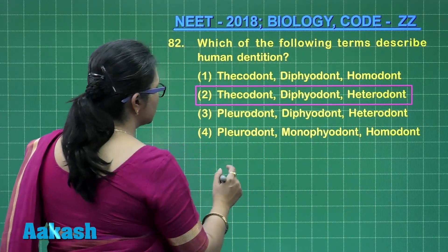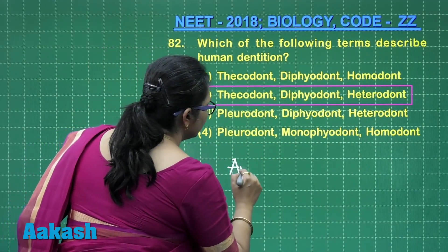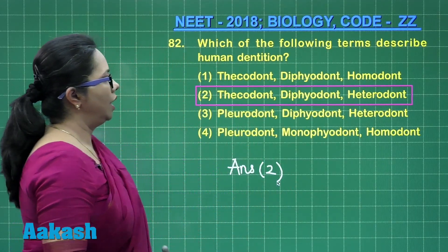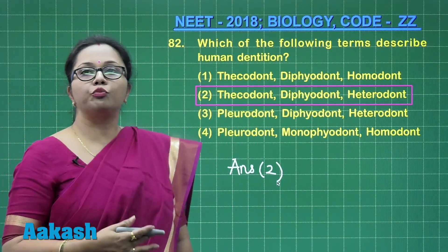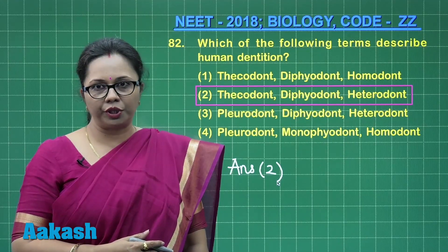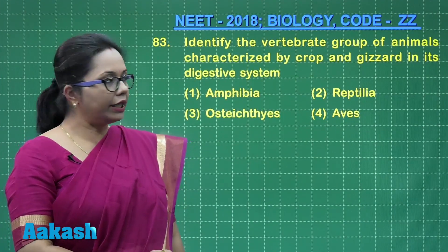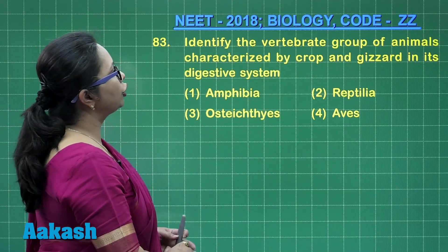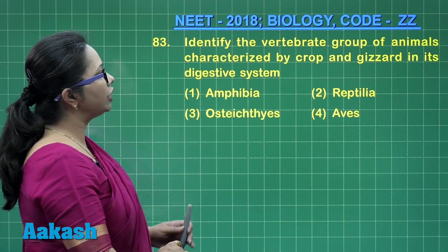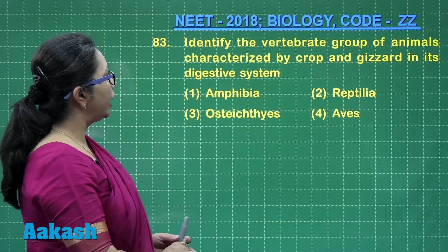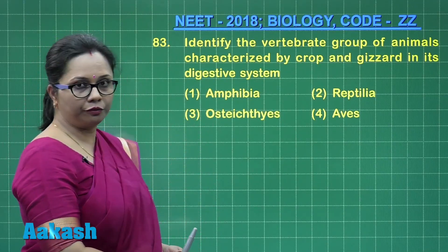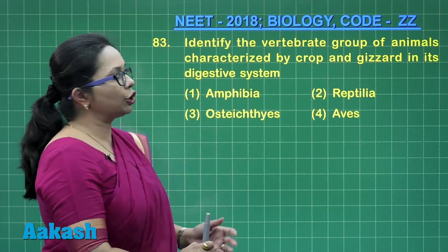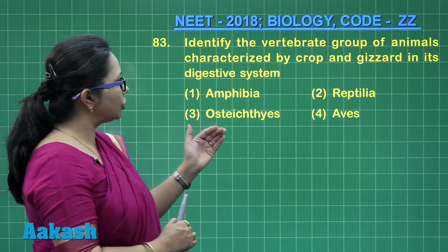This particular option contains all three terms — thecodont, diphyodont, and heterodont — so our correct answer is option two. Moving on to question 83: identify the vertebrate group of animals characterized by crop and gizzard in its digestive system.